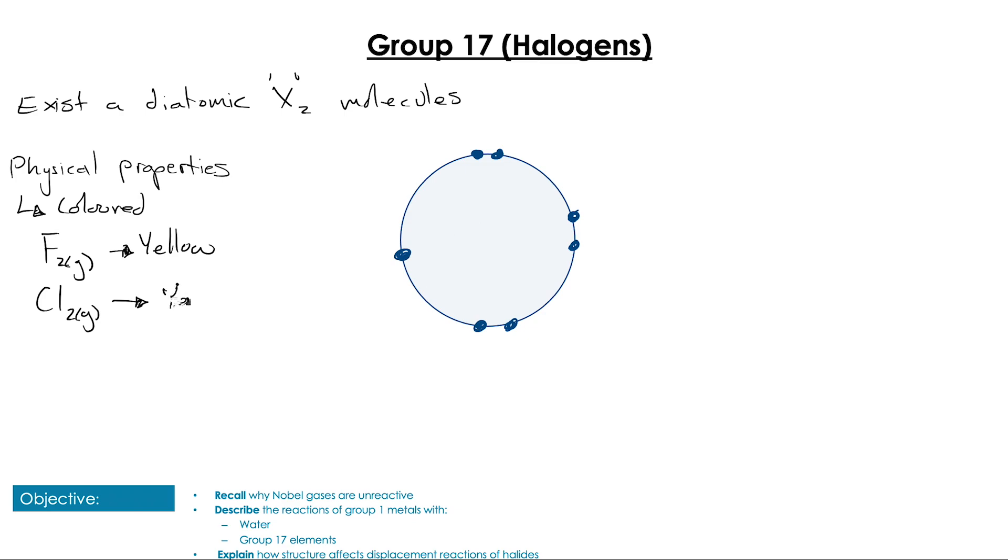They are all colored and the color varies as we go down the group. We have fluorine being yellow, chlorine being green or greeny yellow, bromine being brown, and iodine being silverish.